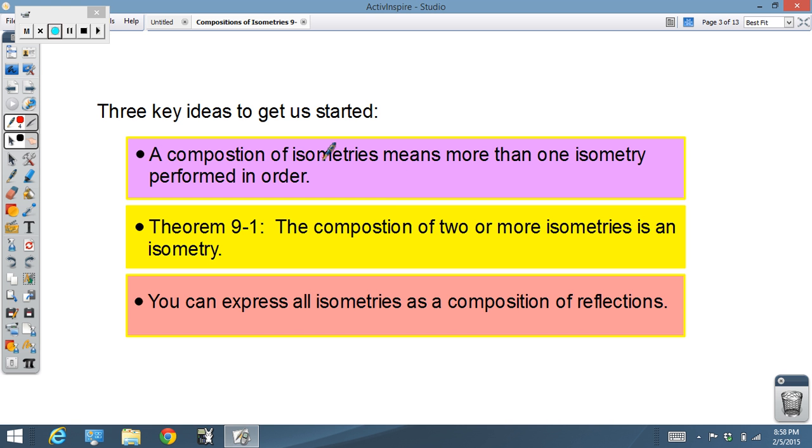Three key ideas to get us started: A composition of isometries means more than one performed one after the other. Now, theorem 9-1, second key idea: The composition of two or more isometries is itself an isometry. So if we put them together, again, lengths and angles are all preserved. So any number that we manage to put together, we still end up with the same exact shape we started with, with, of course, different location, different orientation, reflected, rotated, whatever it might be. But there's still an isometry because it's still the same size and shape. Finally, this one's the cool one: All isometries you can actually make as a composition of reflections.